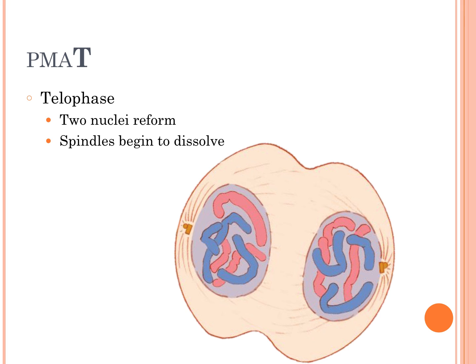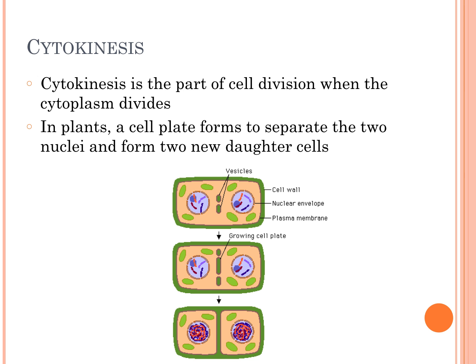Then we have telophase, the last part of mitosis. The two nuclei reform at opposite sides of the cell and the spindles begin to dissolve — telophase means two. The last part of the M phase is cytokinesis, when the cytoplasm actually divides and the cell membrane pinches together to form two new cells. In plants, cytokinesis is a little different: a cell plate forms. You can see vesicles coming in and forming a cell plate, which comes down the middle after telophase and actually separates and divides those cells.